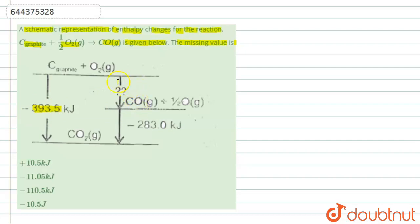The step-by-step reaction is: first, graphite reacts with half of the oxygen to give CO, then CO reacts with half O₂ again to give CO₂. The energy for the second step is minus 283.0 kilojoule.